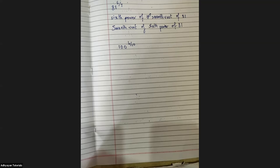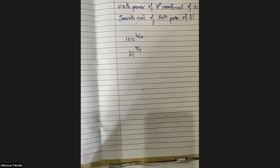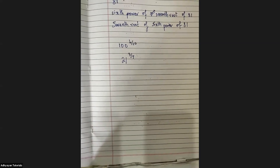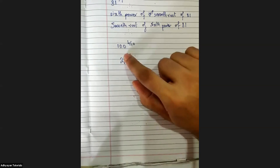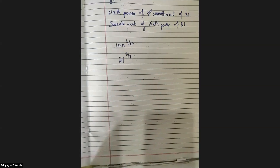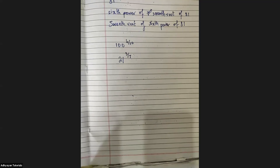Let me try Ramandeep now. There was a technical issue — he was not able to see the screen or hear. Whenever you have that issue, you should quickly leave and join back. Can you see this? In three upon seven, which is the power and which is the root? Three is power and the root is seven. Correct.